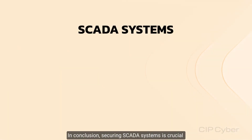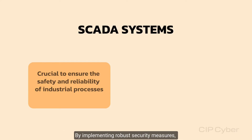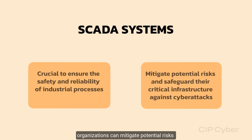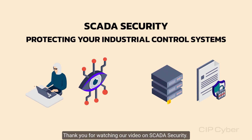In conclusion, securing SCADA systems is crucial to ensure the safety and reliability of industrial processes. By implementing robust security measures, organizations can mitigate potential risks and safeguard their critical infrastructure against cyberattacks. Thank you for watching our video on SCADA security.